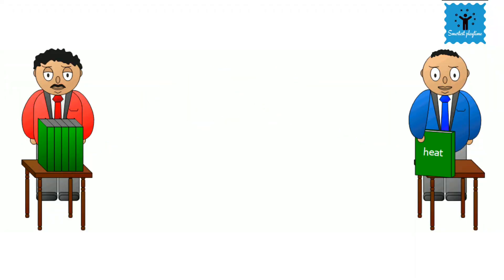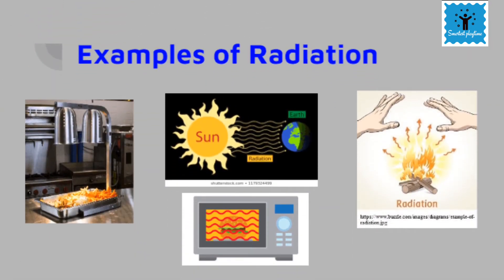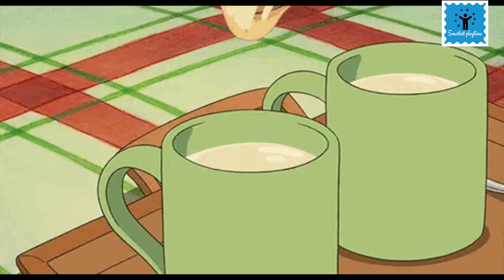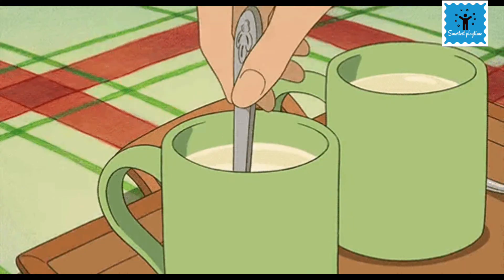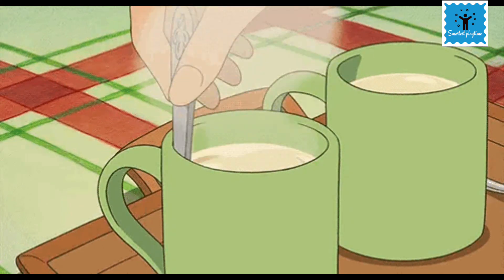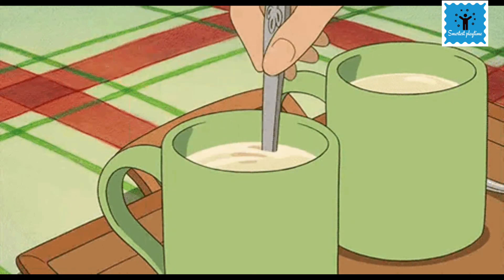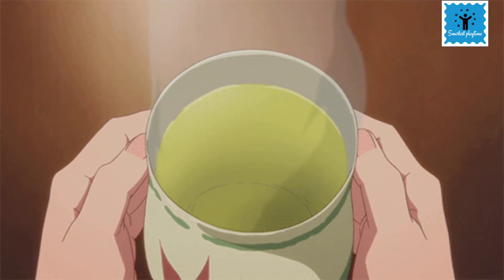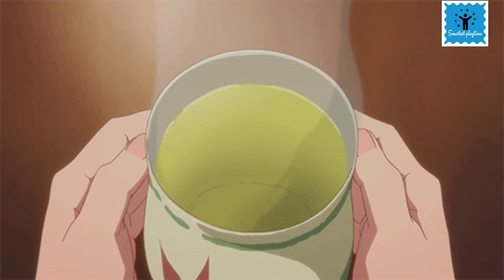The transfer of heat by radiation doesn't require any medium — it can take place whether or not any medium is present. In our day-to-day activities we see many situations where heat is transferred by radiation. For example, if we keep a hot utensil or a hot glass of milk away from the flame, it cools down after some time by transferring its heat to the surroundings by radiation.